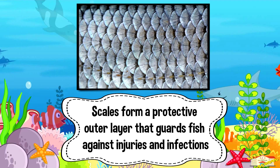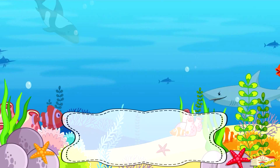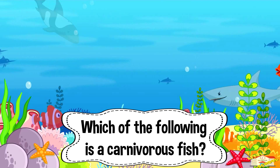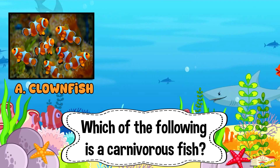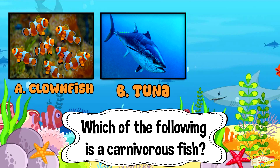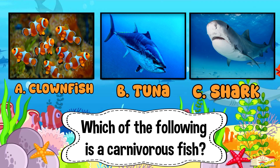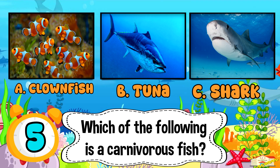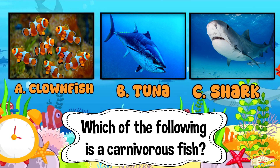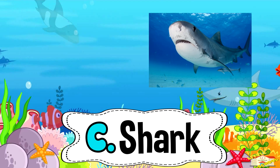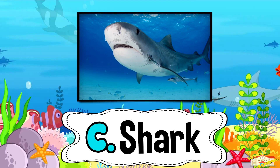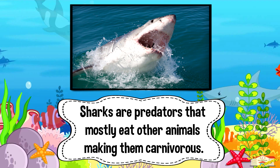Which of the following is a carnivorous fish? A: clown fish, B: tuna, or C: shark? Five, four, three, two, one. And the answer is C: shark. Sharks are predators that mostly eat other animals, making them carnivorous.